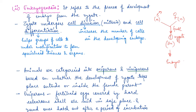During embryogenesis, the zygote undergoes mitosis to increase the number of cells in the developing embryo. Once they reach an optimal number, these cells form groups and undergo modification to form specialized tissues and organs, and they develop into an embryo.